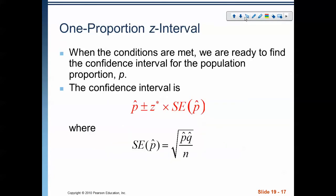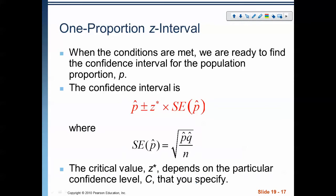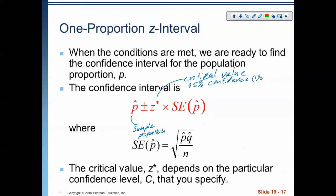Putting it all together, here is the formula for a confidence interval. When the conditions are met, we can find a confidence interval for a population proportion. We start with p-hat — the sample proportion — then plus or minus the critical value (z-star) times the standard error of p-hat, which is the square root of p-hat times q-hat over n. For a 95% confidence interval, z-star is 1.96. The critical value changes depending on the confidence level. I'll have a separate video showing how to do it all in a calculator.